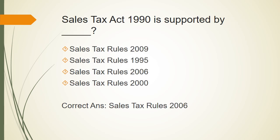Sales Tax Act 1990 is supported by rules. All laws — Sales Tax Act, FED Act, Income Tax Ordinance — were made by lawmakers, but the minute details cannot all be included in the Acts themselves as they would become too voluminous. So separate rules are made for each Act. For Sales Tax, there are Sales Tax Rules 2006. Similarly, for Income Tax Ordinance 2001, there are Income Tax Rules 2002.